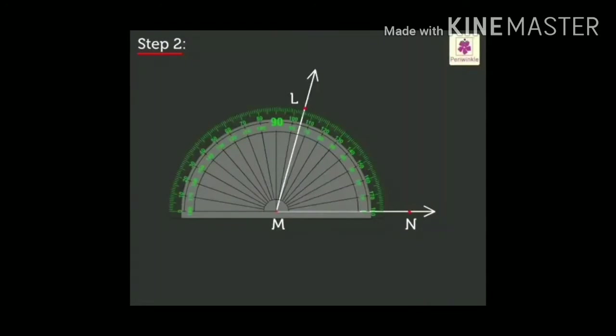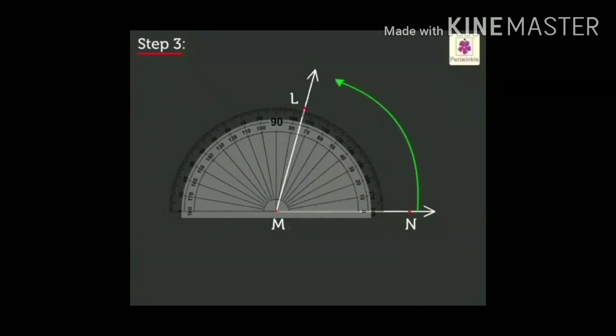Observe that the angle forming between these two rays, LM and MN must be between at the protractor point. Baseline MN given here must coincide the 0 degrees of the protractor. After that,